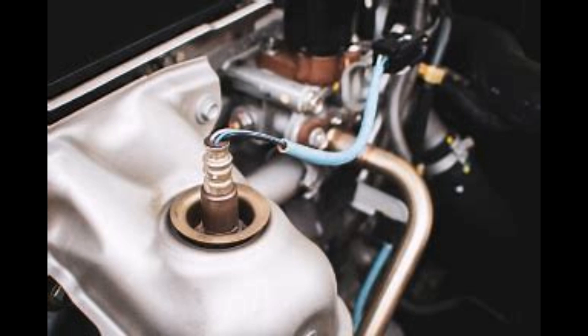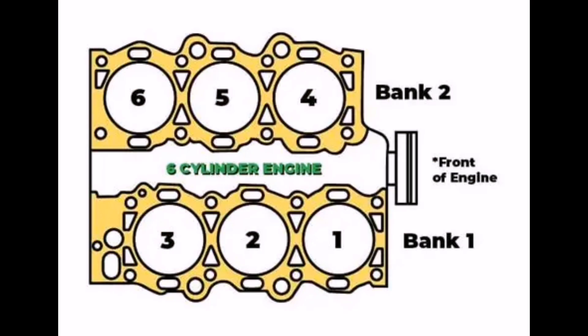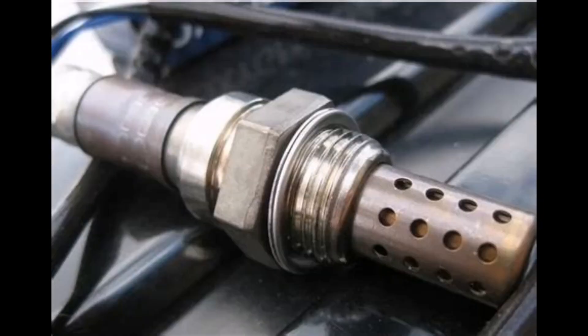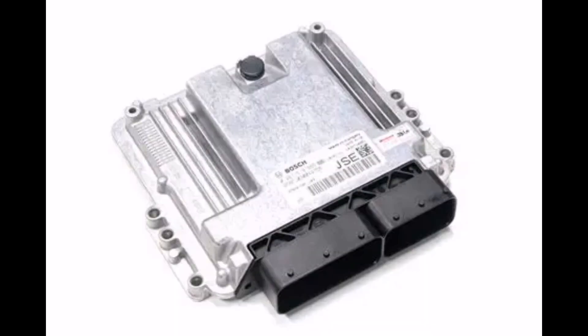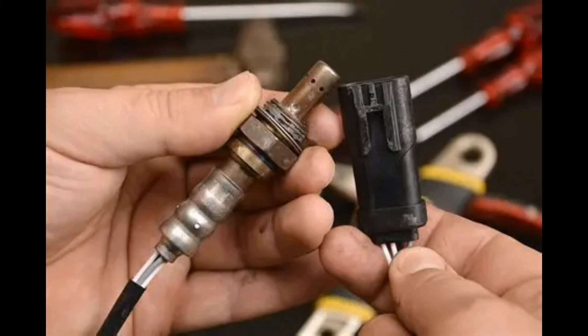What is P0130? P0130 refers to the oxygen sensor circuit for bank one, sensor one. Bank one is the side of the engine that contains cylinder number one. Sensor one is the upstream oxygen sensor placed before the catalytic converter. This sensor measures the oxygen level in the exhaust gases.